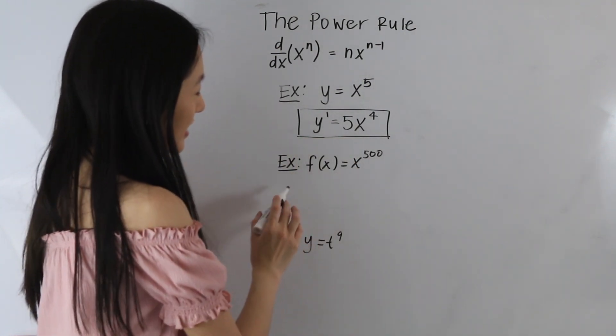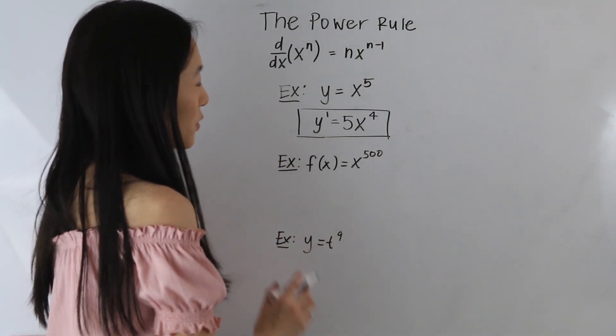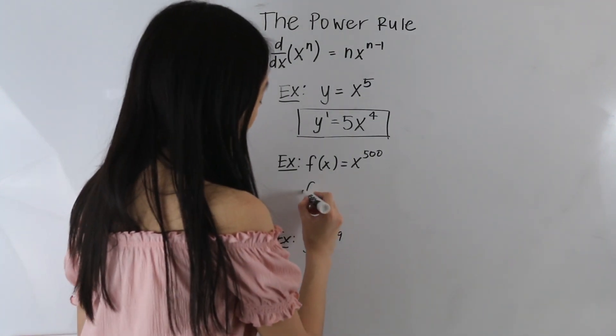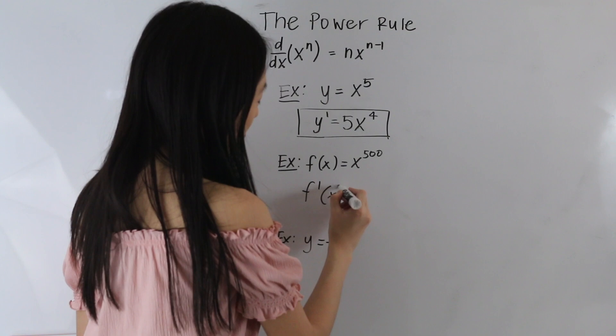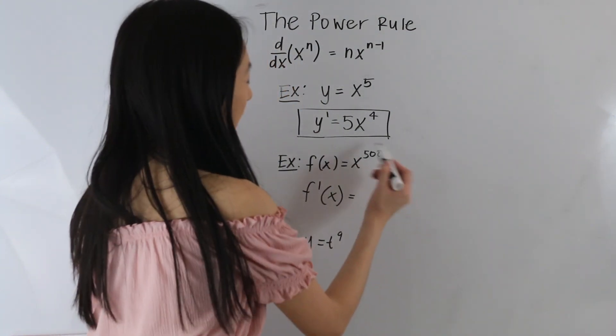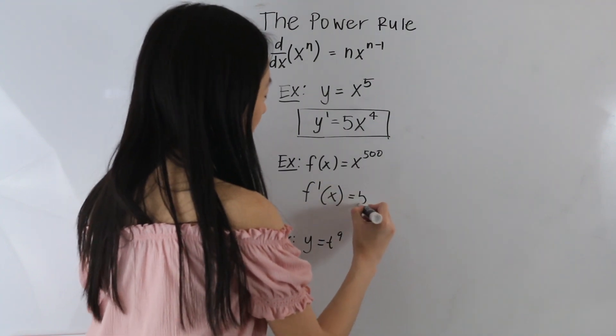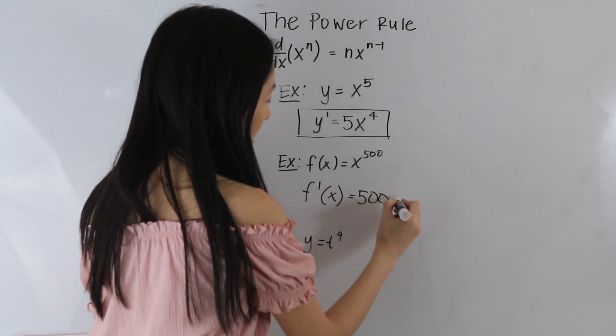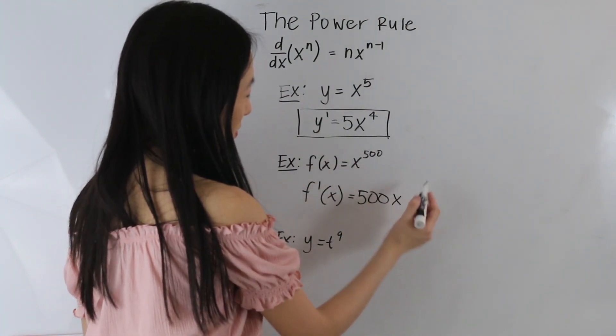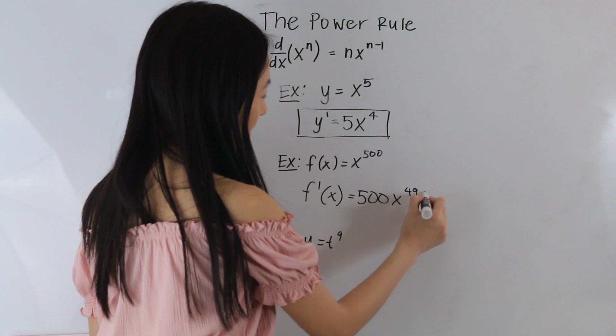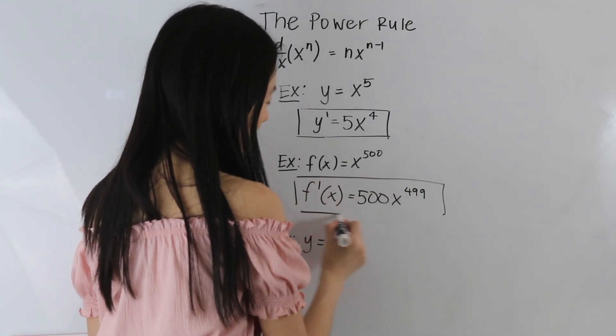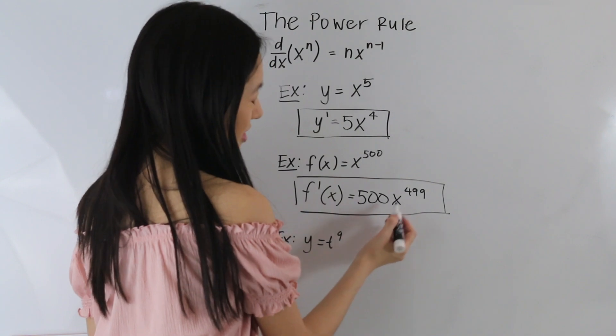Okay, and in this next example, we have f of x is equal to x to the 500. So the first thing we're going to do is write f prime of x. And so now what we want to do is we want to bring this power down. So we have 500x, and we want to subtract 1 from our power. So 500 minus 1 is 499. So we have the derivative, f prime of x is equal to 500x to the 499.